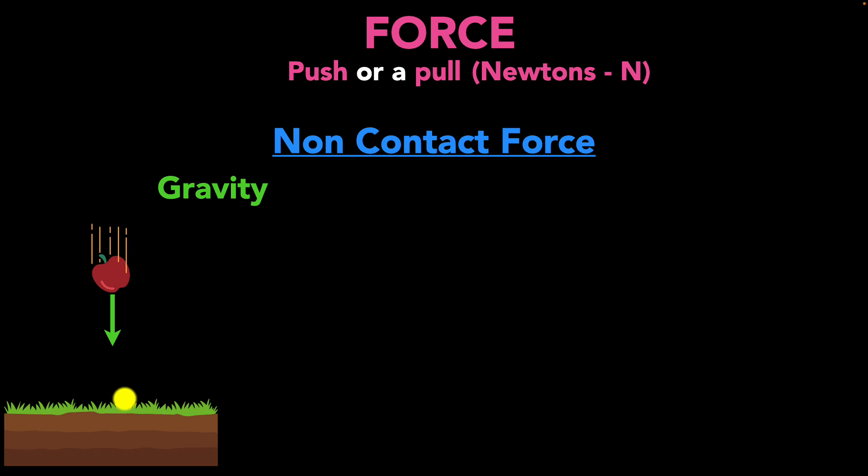But guess what? Earth isn't the only thing exerting the force of gravity. In fact, any two masses will exert a force of gravity on each other. So on a larger scale, this is the reason why planets are orbiting the sun, because the sun is exerting a force of gravity on all these planets.